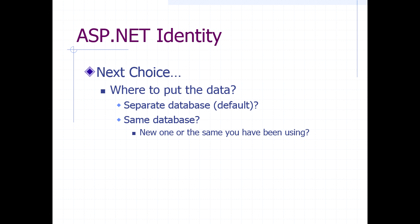Can anybody think of a reason why you might want separate databases for your project data and your security? One great answer: if you use your security across several applications or platforms, one database holds all the security and multiple web apps can all use the same one. Once you've established your login and profile in one app, it carries over to all others. Another answer: possibly more secure — if there's a breach on the data side, the security database is separate.